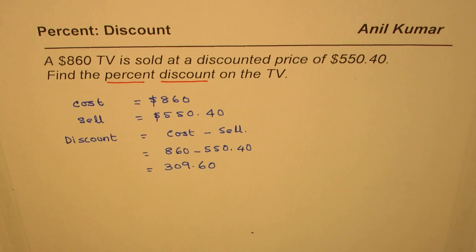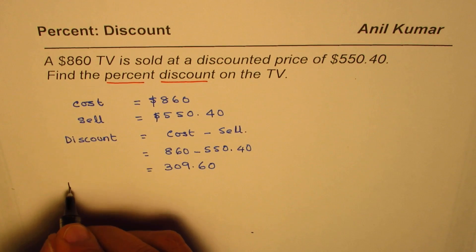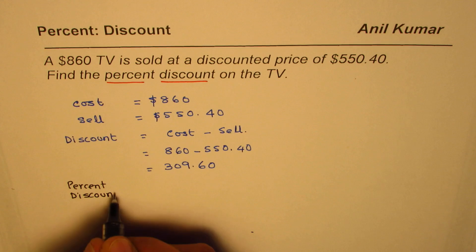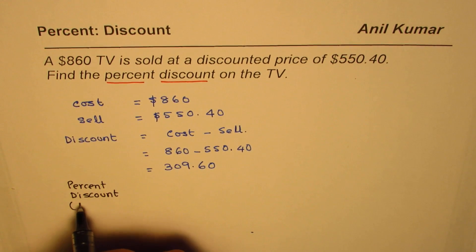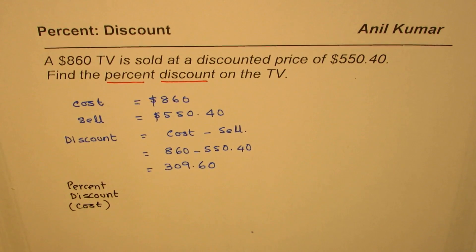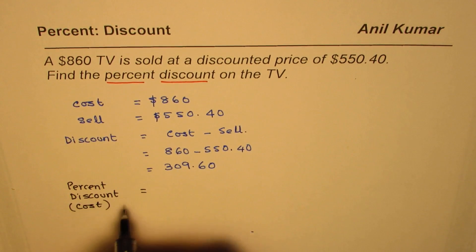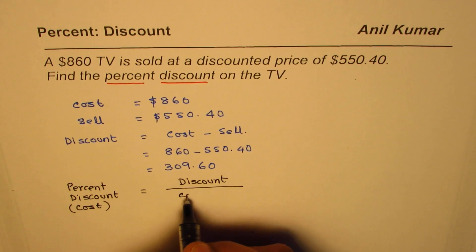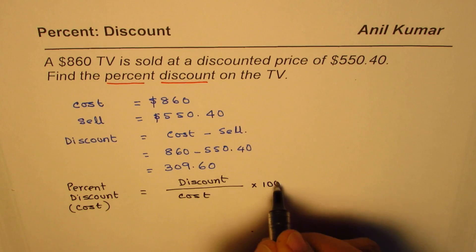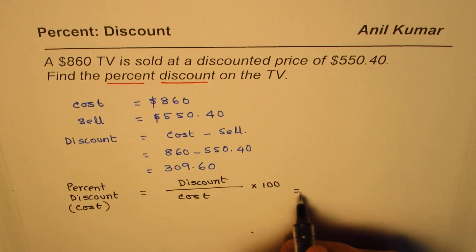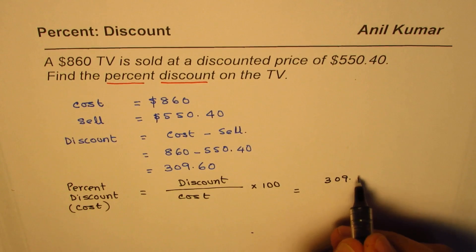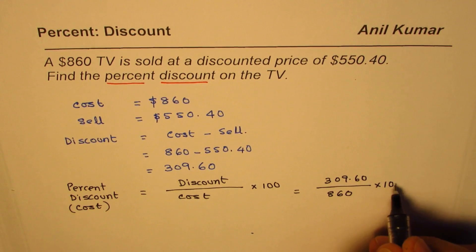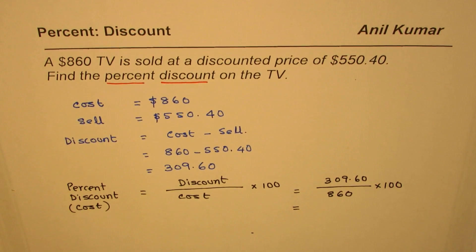What we really need to find is percent discount. Whenever you're finding percent discount, it is always based on the cost price. The formula is: percent discount = (discount / cost price) × 100. We'll plug in these values — discount is 309.60, cost price is $860 — then multiply by 100.